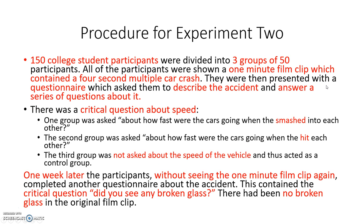The procedure for experiment two: 150 college student participants were divided into three groups of 50 participants. All participants were shown a one-minute film clip which contained a four-second multiple car crash. They were then presented with a questionnaire asking them to describe the accident and answer a series of questions. One group was asked how fast the cars were going when they smashed into each other, the second group when they hit each other, and the third group was not asked about speed and acted as a control group.